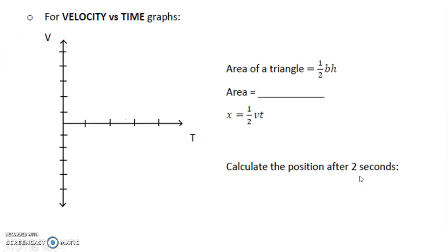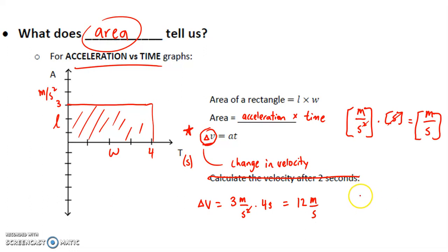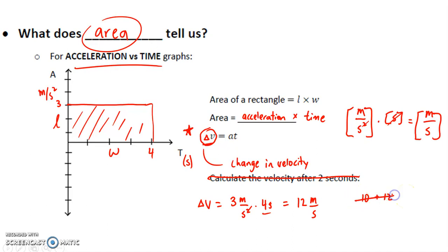Let's use numbers to make this clearer. Say I have an acceleration of 3 meters per second squared for 4 seconds. My change in velocity is 3 m/s² times 4 seconds, which gives 12 meters per second. So if I started at rest, four seconds later I'd be moving at 12 m/s. If my initial velocity was 10 m/s, my velocity would change by 12 m/s to become 22 m/s — that's 10 plus 12.